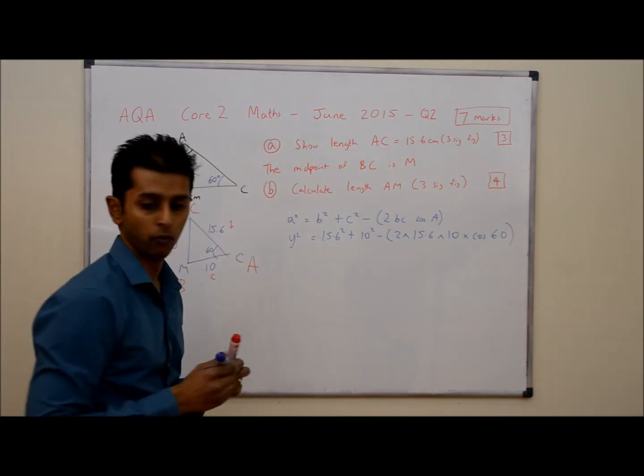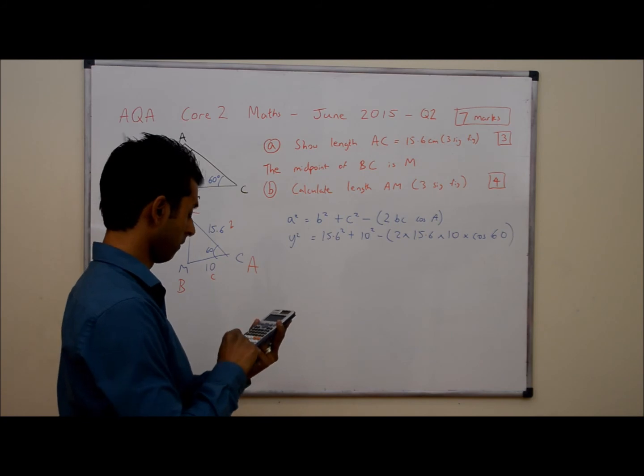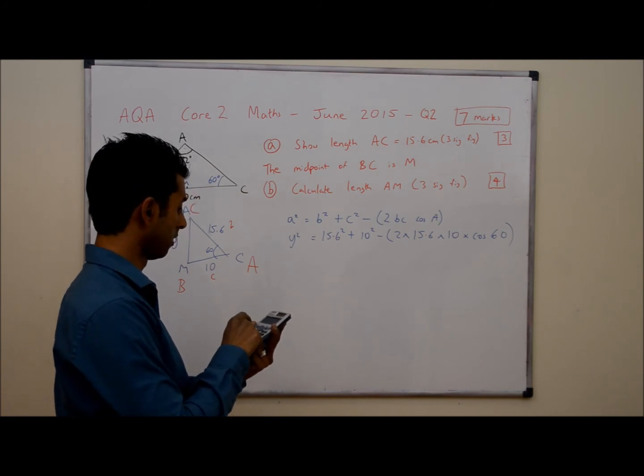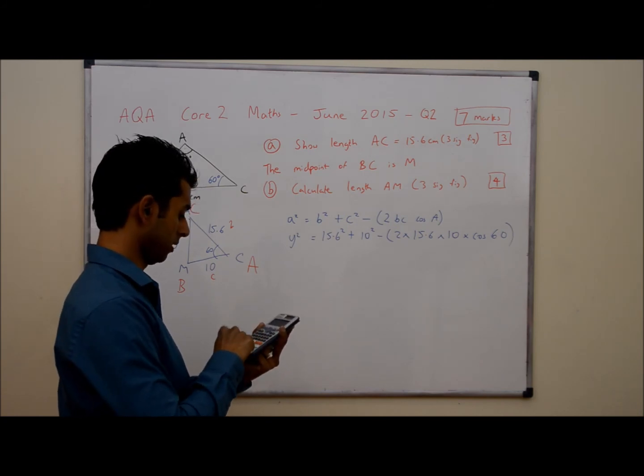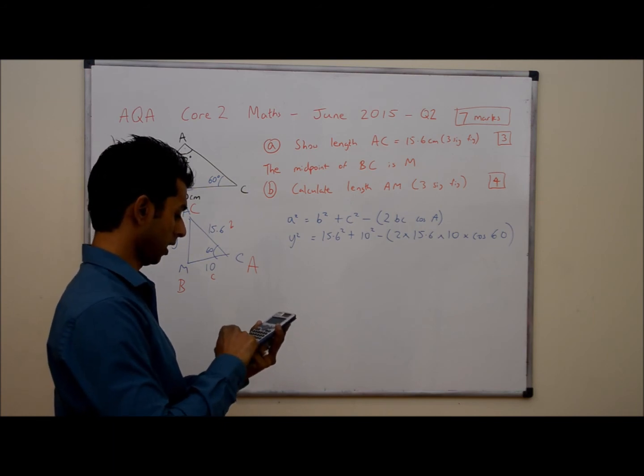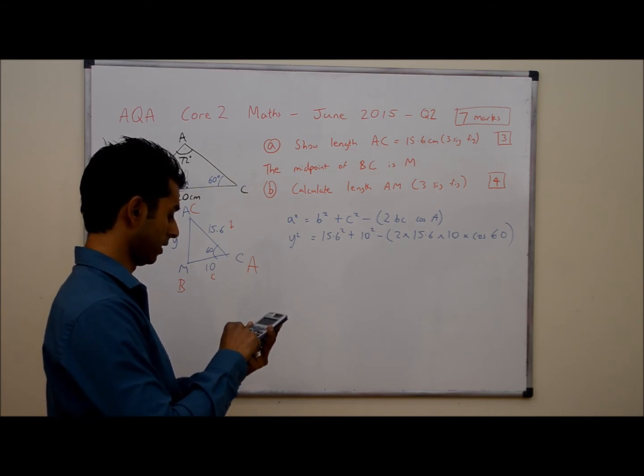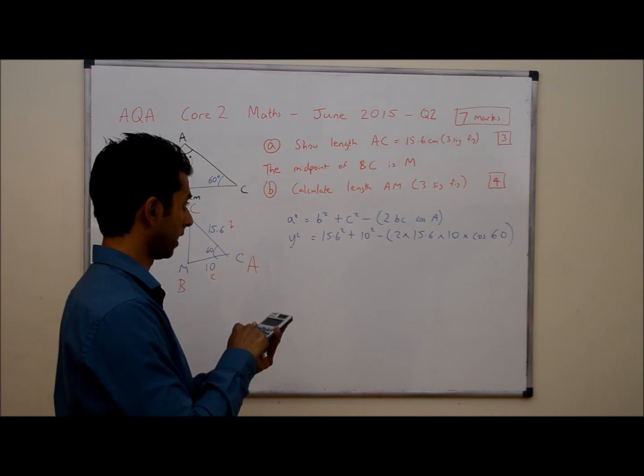So we're going to type that all into our calculator in one go. So that's going to be 15.6 squared plus 10 squared minus 2 times 15.6 times 10 times cos 60. Now what I've used instead of 15.6, I've used the exact answer here.